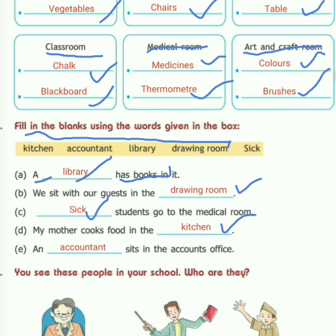Part E: an blank sits in the account's office. Who sits in the account's office? The accountant. So an accountant sits in the account's office.